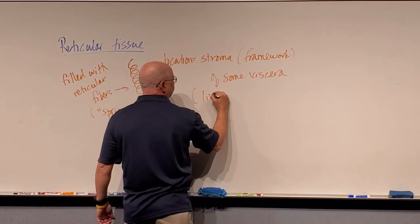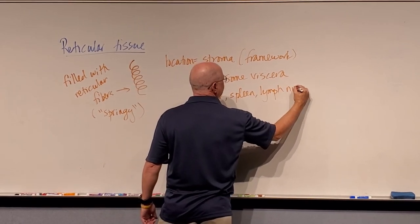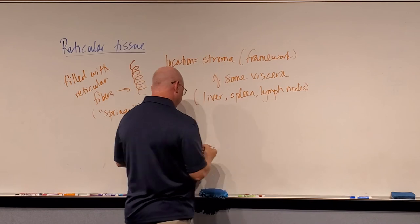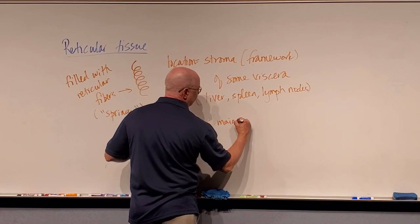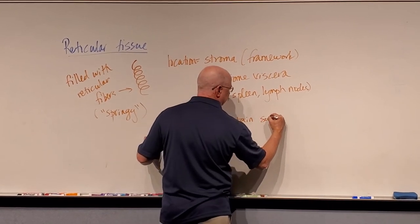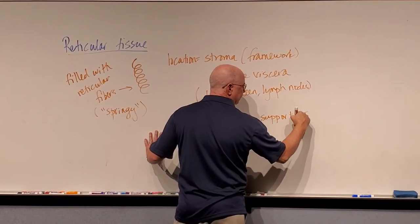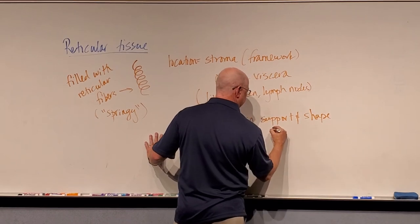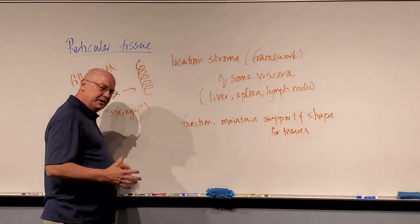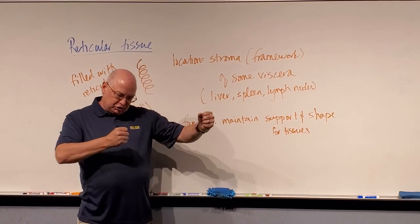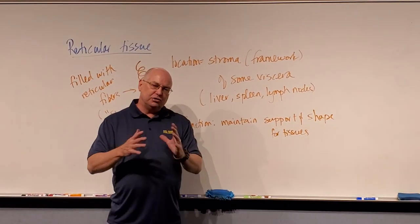They are rather, I think of them as being springy, sort of. It is found—the location of this tissue is—in what we call the stroma, which means framework of some viscera. For example, the liver, the spleen, and we sometimes find them in lymph nodes. They help maintain support and shape of the tissue. They provide support and shape. They're very springy. You can stretch or smash the tissue, and it will spring back because of the reticular fibers, in addition to elastin and collagen.